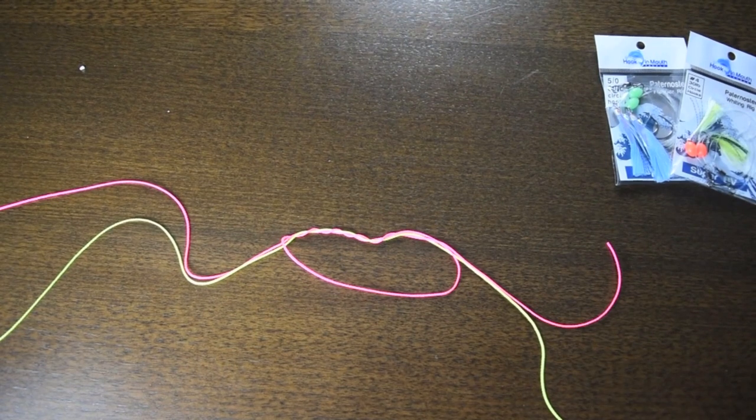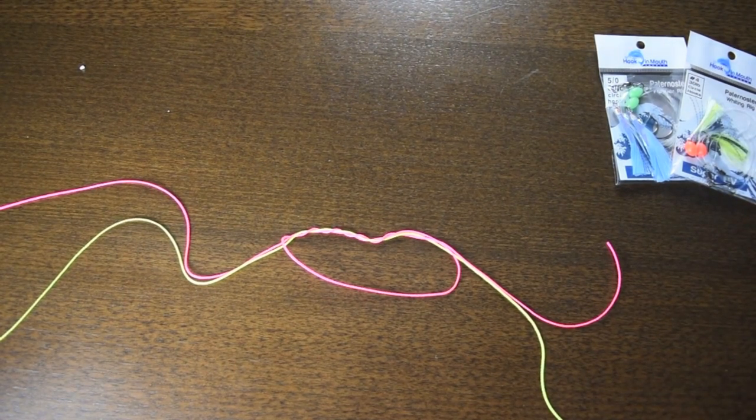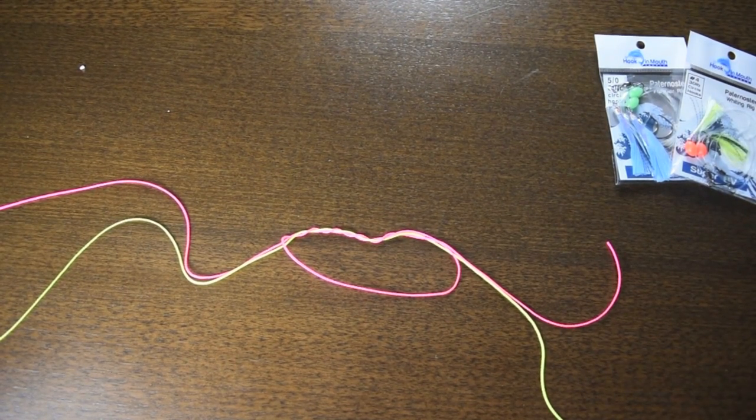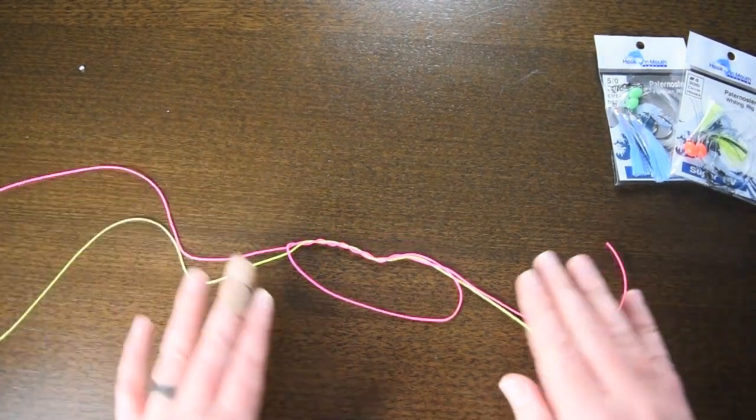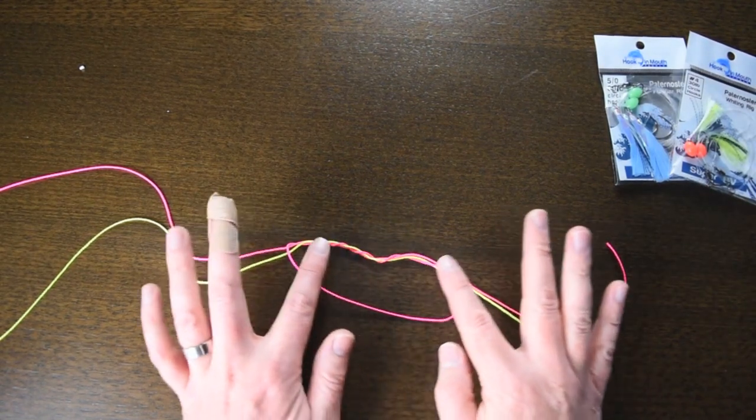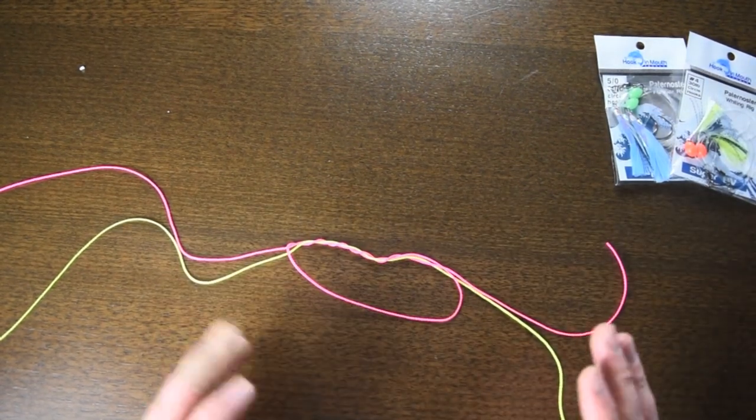There's no set amount of times that you actually have to wrap it. I like to do five at a time but it's really up to you. Essentially what you have now is four tab ends. Normally what you would do is lubricate this area here, but because we're obviously using builder's line we're not going to do that.